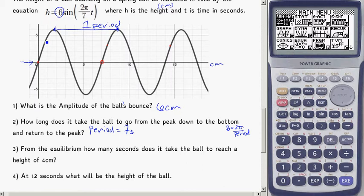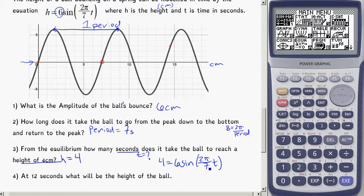So, getting to the four seconds, or the four centimeters, how long does it take us to get there? A height of four centimeters, I know now that h is equal to four, and I'm looking for seconds, which is time. And like all the problems we've done before, we're going to do some substitution. Then use our calculator to solve it out. So I know that h is equal to four, so I'm going to say four is equal to 6 sin bracket 2π over 7t bracket.